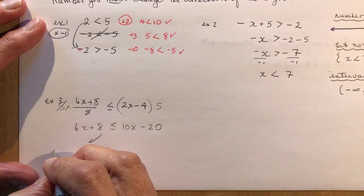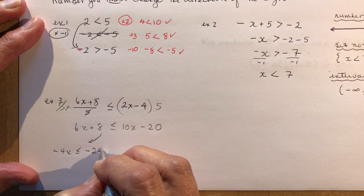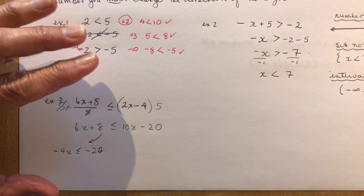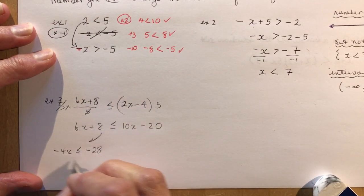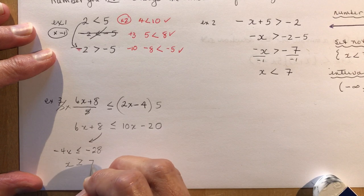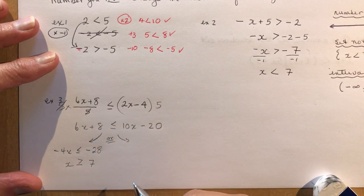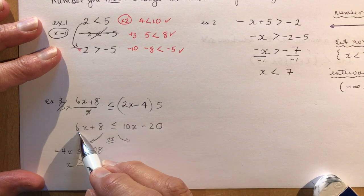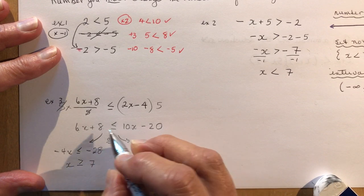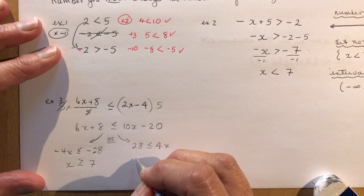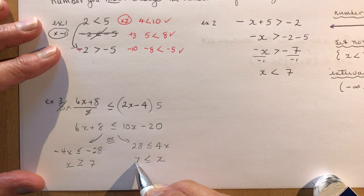Method one: bring 10x over to get negative 4x, and bring 8 over to get minus 28, so negative 4x ≤ -28. Dividing by negative 4 requires changing the sign, giving x ≥ 7. Method two: to avoid dealing with negative division, bring x-terms to the side where they stay positive. That gives 28 ≤ 4x, and dividing by 4 gives 7 ≤ x — which is the same result.